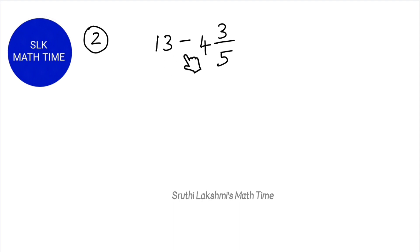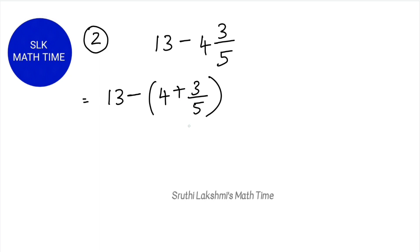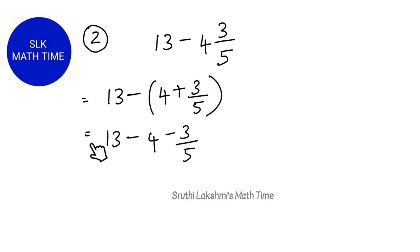So here we have 13 minus 4 and 3 fifths. In this example, we are going to first look at the expanded form and then look at the trick. So 4 and 3 by 5 is nothing but 4 plus 3 by 5. So we are going to do 13 minus 4 plus 3 by 5, which expands to 13 minus 4 minus 3 by 5. First, we subtract the whole numbers: 13 minus 4 is 9.